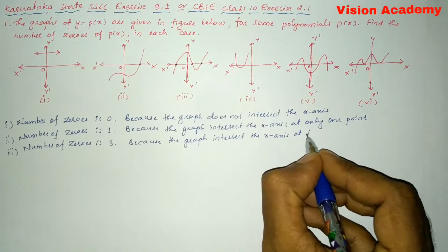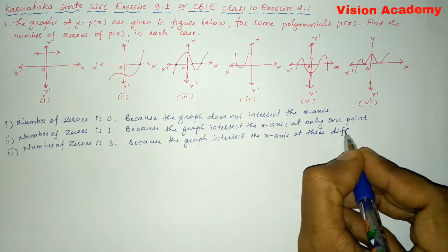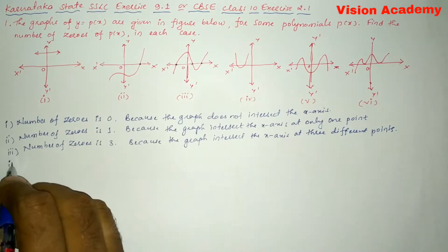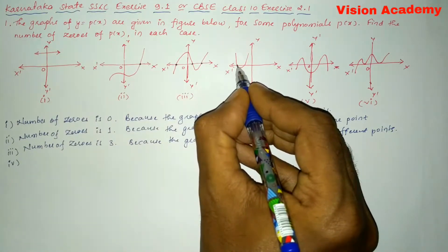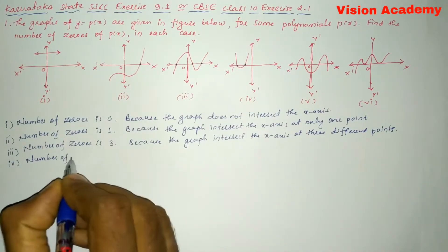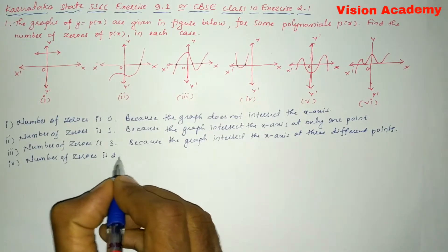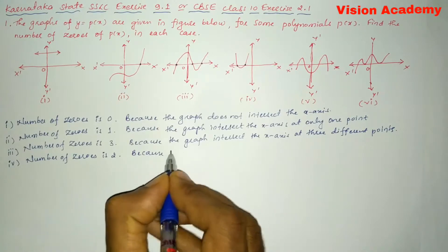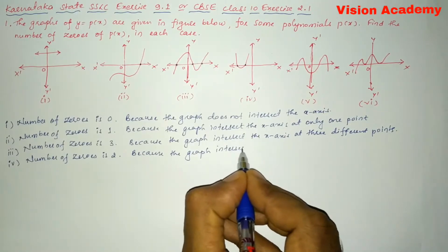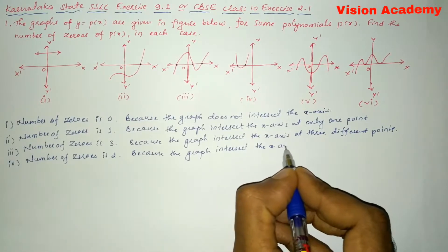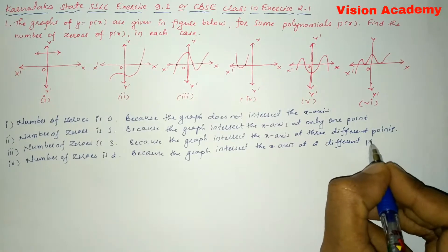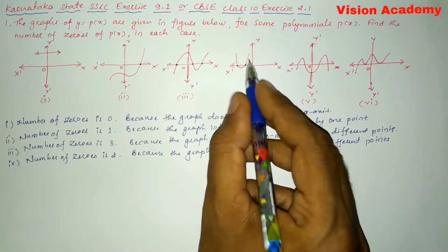Now let us move on to Roman number 4. Here you can see the graph is intersecting the x-axis at two points. This graph is a parabola. Therefore we can write the number of zeros is 2, because the graph intersects the x-axis at two different points.